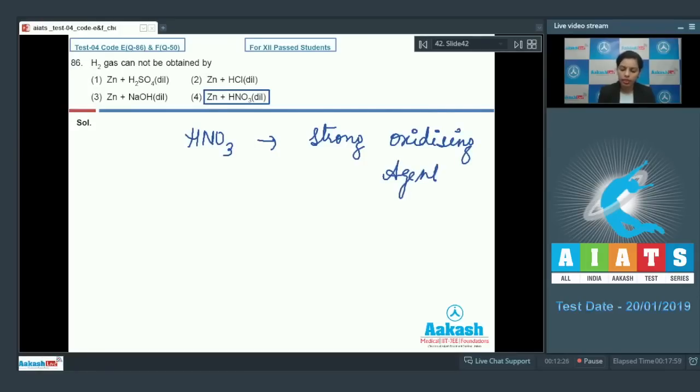When dilute HNO3 reacts with zinc, hydrogen gets oxidized into water and one of the nitrogen oxides is also formed during this reaction. So basically this is the reaction in which hydrogen is not evolved, and that's why I'm choosing option 4 as the correct option.